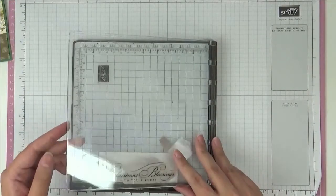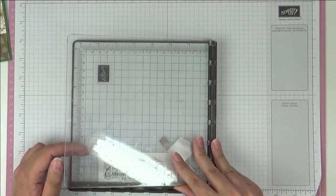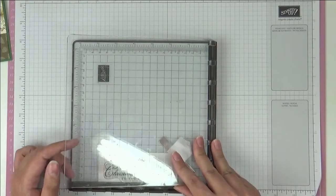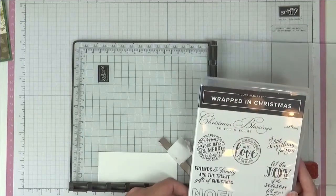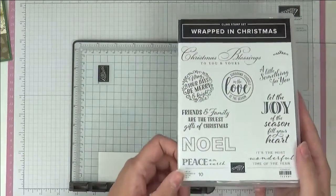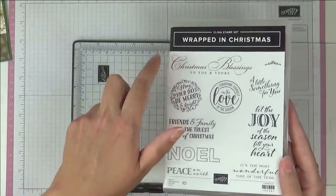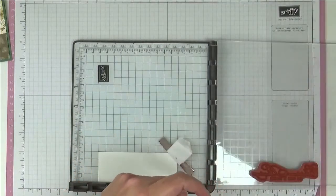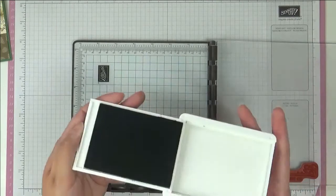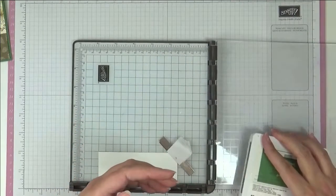I have a piece of Whisper White here already in my Stamparatus, and this measures 4 by 11 centimeters. The stamps that we're going to be using today is this one called Wrapped in Christmas, and we're using this sentiment here. But isn't that a great amount of sentiments there? We're going to stamp it in Garden Green, so let's just do that.